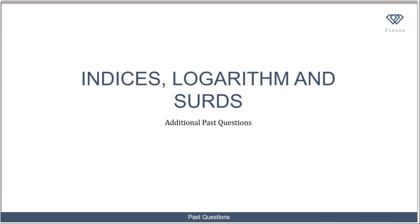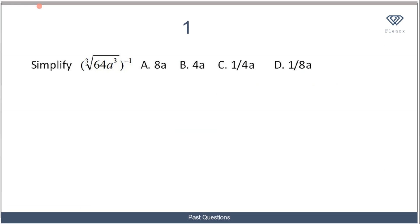Hello. As I've mentioned before, some of the questions we solved in the examples are actually JAMB past questions, and how would you know? All the questions that had options in them are actually JAMB past questions. So now we're going to try to solve some additional questions just to cover everything that we've learned in this section.